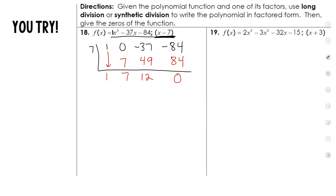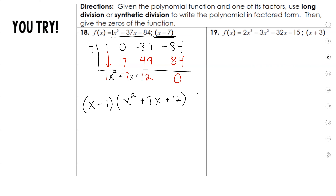If you get a remainder, that means whatever number you tried is not a factor. We ended with 0 — that's great news. We always go down a degree, so this will be x squared plus 7x, and the constant is 12. The factor they gave us was x minus 7, and then we have x squared plus 7x plus 12.